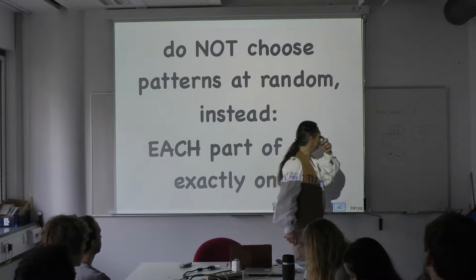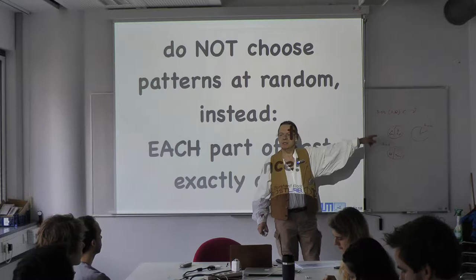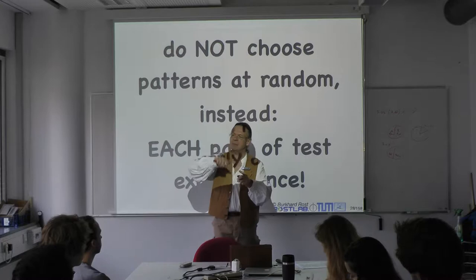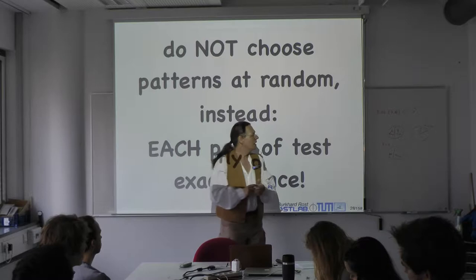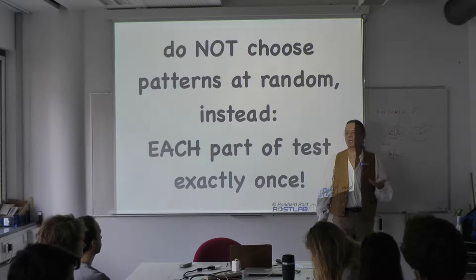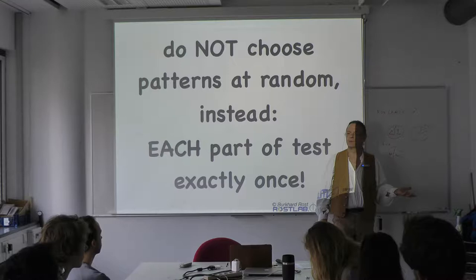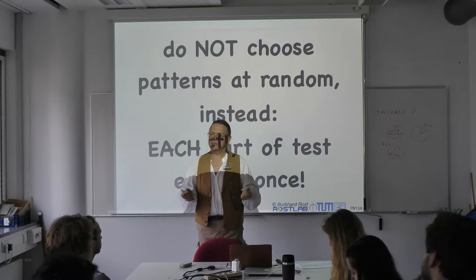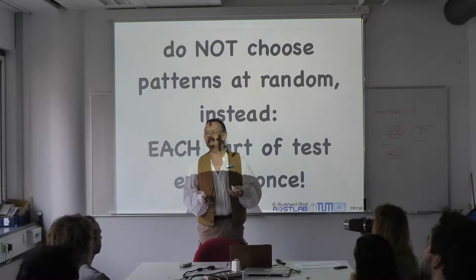So by that definition, no redundancy means no sequence similarity such that you cannot do that inference. This means that any pair in this circle will be below this sequence identity. Once you have guaranteed that, you can completely randomly choose how you split the circle. But you must still ensure every protein is sampled once — sampled exactly as often as you have it in your data. That is the definition of no redundancy.